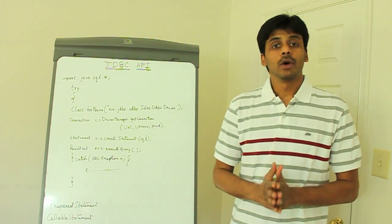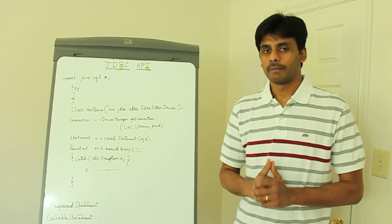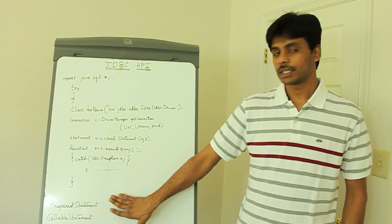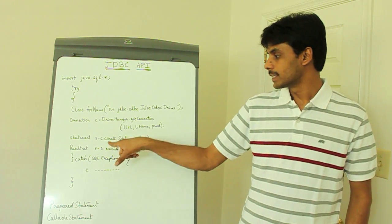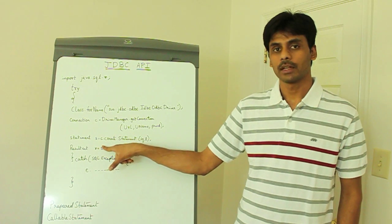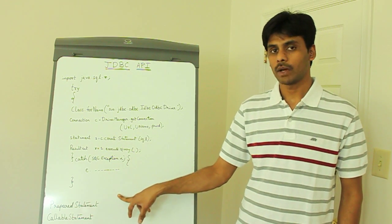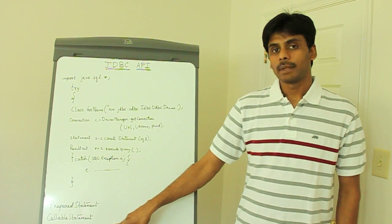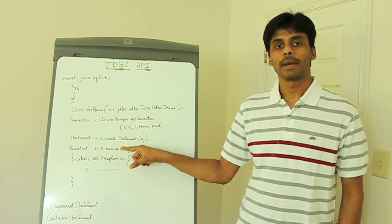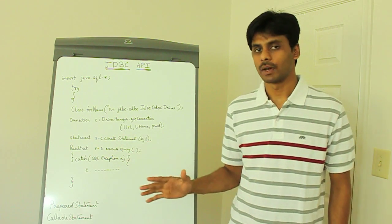To execute stored procedures from within your Java code, you use the CallableStatement. To create a PreparedStatement, instead of invoking the createStatement method on the Connection object, you invoke createPreparedStatement. To create a CallableStatement, you invoke a method called prepareCall on the Connection object.